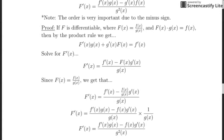I hope that makes sense. In particular, I hope the transition between those steps makes sense. If it doesn't, just pause and take a couple of minutes to think through the algebra — it is actually relatively straightforward, though the f(x) and g(x) notation can be a bit much. Now let's take a look at some examples so you can see the quotient rule in action.